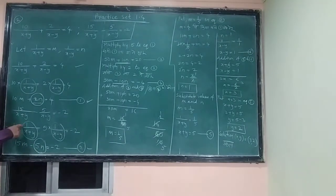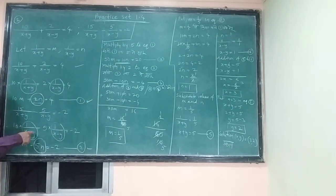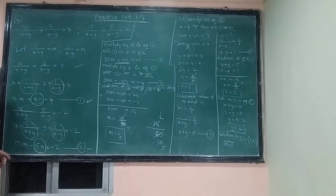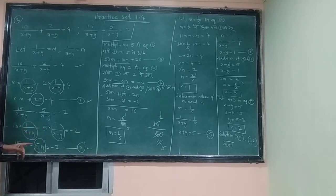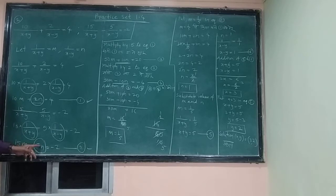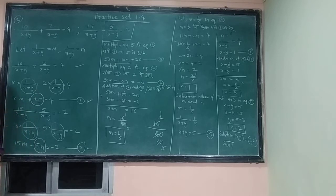The second given equation: 15 into 1 upon (x - 1) minus 5 into 1 upon (x - 1) is equal to minus 2. That's why the equation becomes 15n minus 5n is equal to minus 2. This is the second equation.